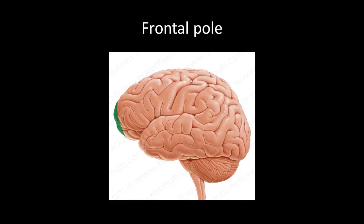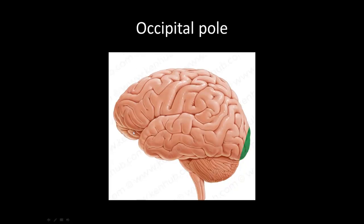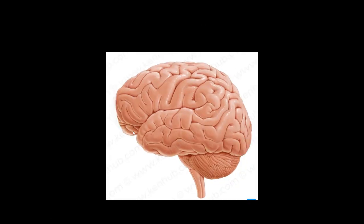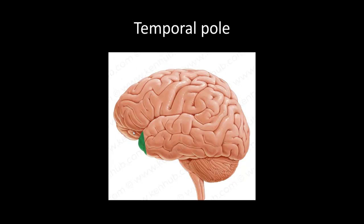Next, the poles — these are just the most rostral or caudal areas of each lobe. We have the frontal pole, the most rostral part of the frontal lobe; the occipital pole, the most caudal part of the occipital lobe; and the temporal pole, the most rostral part of the temporal lobe.